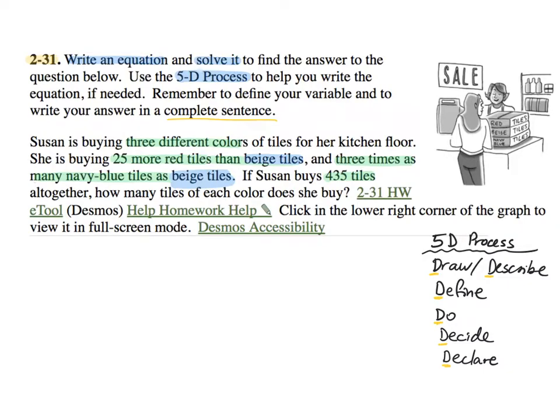So I'm going to draw. I know there are three types of color tiles. I'm just going to use one color in this case. But I'm going to say we have beige, we have red, and we have navy blue or blue.